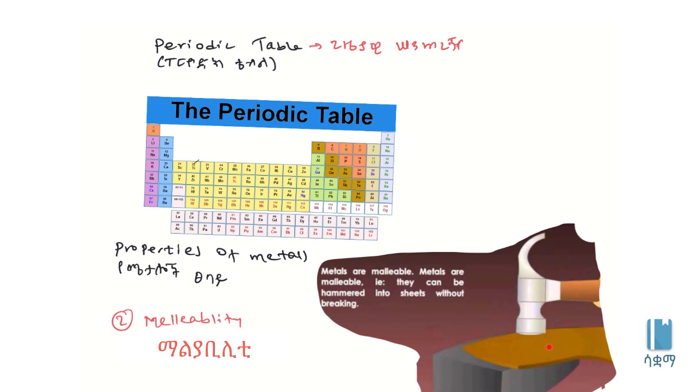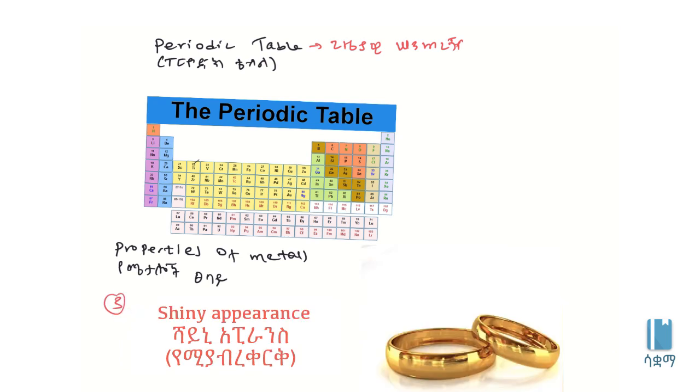The metal property we're discussing is ductility. Ductility is the property where metals can be drawn into wires. When you pull the metal, it becomes wire. If you notice how wires are made, metals can be stretched into thin wires because of this ductility property.